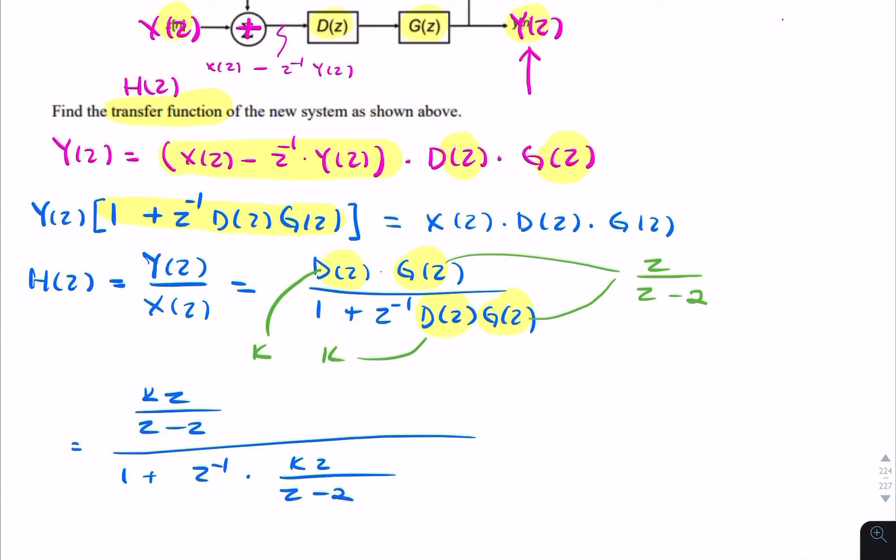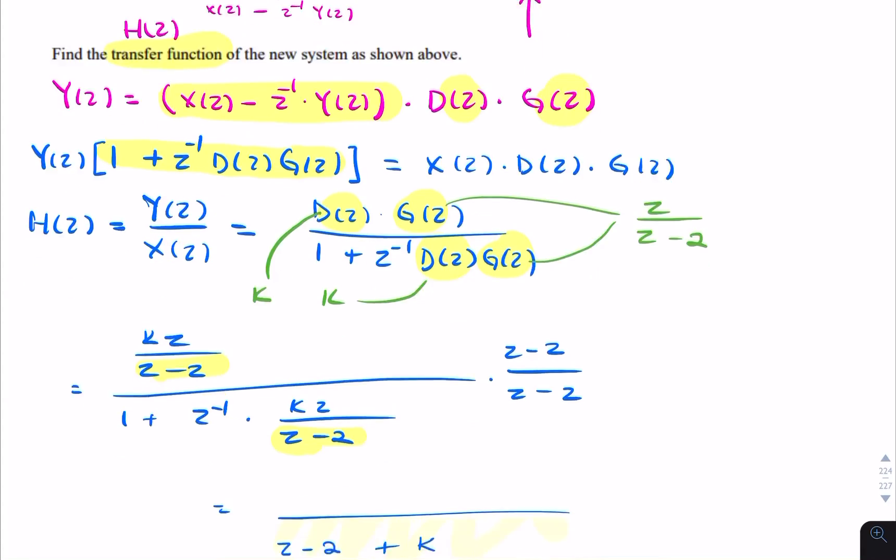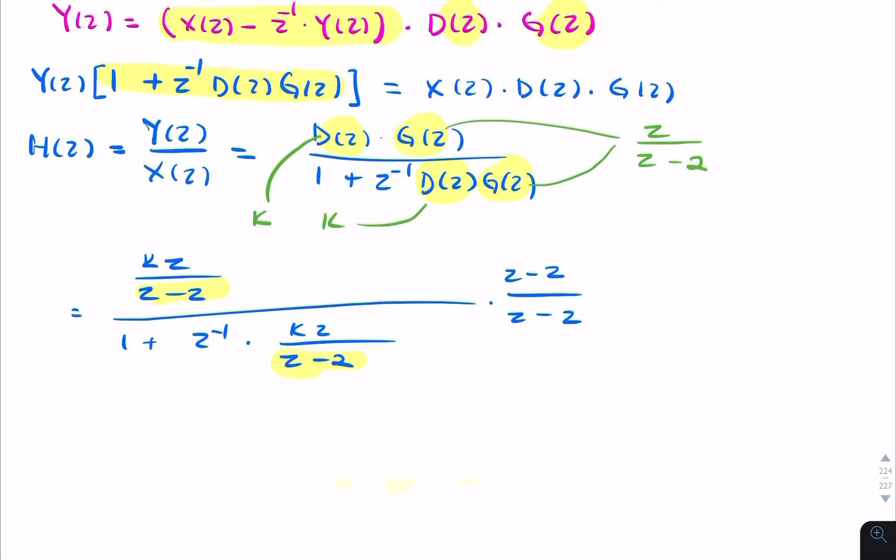Now that would be my final answer, but I could simplify this by multiplying it by z minus 2 over z minus 2, just to get rid of these denominators here. So my final answer will be kz divided by z minus 2. And that will cancel with that, that, and that will cancel with this and that. Okay, minus 2.